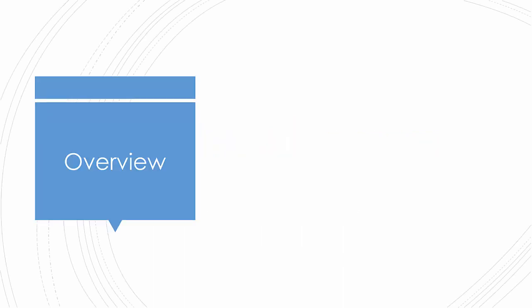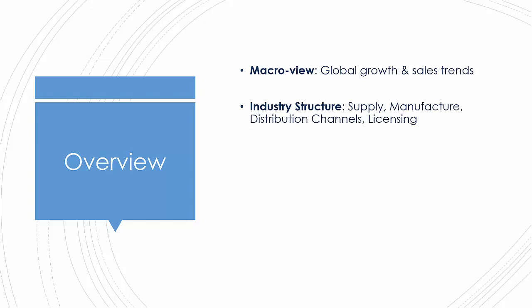Let me give you a quick overview of the content of this industry analysis. We're going to begin with the macro view, looking at global growth and sales trends. We'll narrow in on regional sales and regional developments and major country markets in the beverages industry, drawing out key trends in recent years and looking at projections going forward. From there we'll move into the specifics of the industry structure — the supply, manufacture, distribution channels and issues pertaining to licensing.